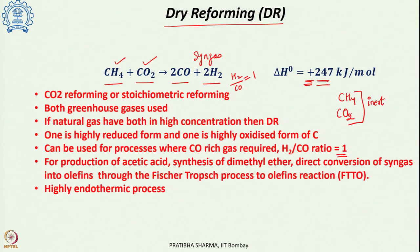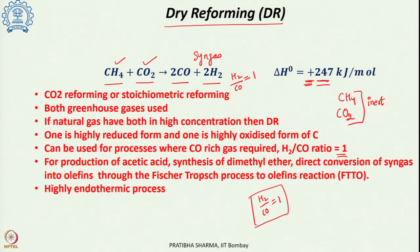Both feedstocks and oxidant are relatively inert stabilized forms, so high activation energy is required to make them react — that is why it is a highly endothermic process. With an H2/CO ratio of 1 it may not be ideal for direct hydrogen production; however, the syngas produced can be used directly for various processes such as oxo processes, production of acetic acid, synthesis of dimethyl ether, and conversion into olefins via Fischer-Tropsch-to-olefin reactions.